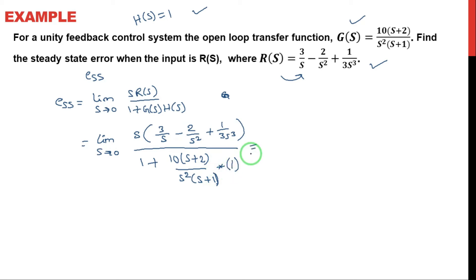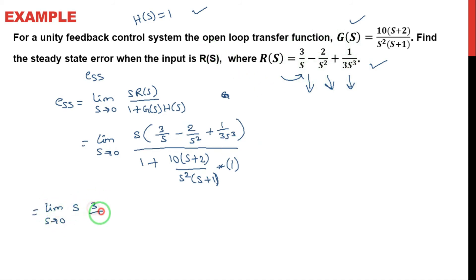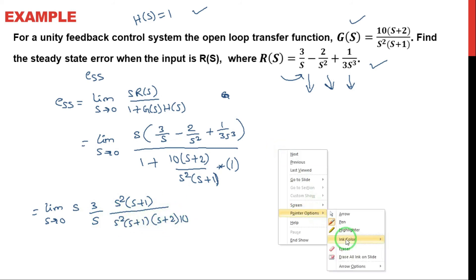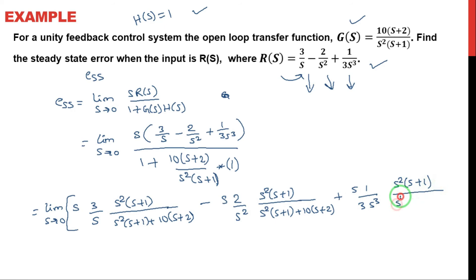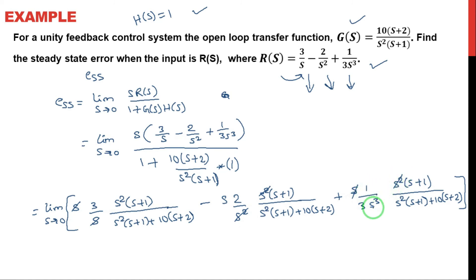Before applying the limit S tends to 0, we have to handle the input signals separately. There are 3 input signals: 1/s is a step signal, 1/s² is a ramp signal, and 1/s³ is a parabolic signal. There is a combination of 3 input signals connected to the control system. The 3 inputs are treated separately and the limit is applied. So S cancels: S into 1/s cancels, S into 1/s² leaves 1/s, and S into 1/s³ leaves 1/s².